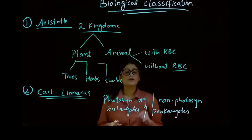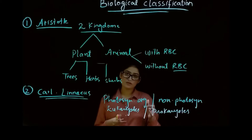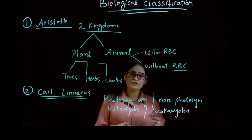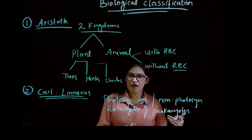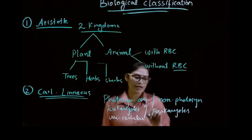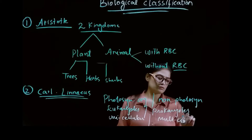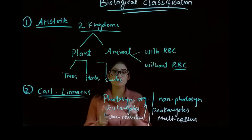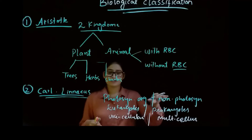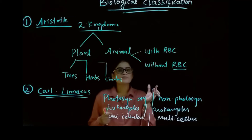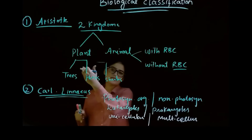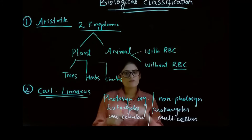Photosynthetic organisms are those who can prepare their food in the presence of sunlight. Eukaryotes are defined as having a well-defined nucleus, while prokaryotes do not have a well-defined nucleus. In the same way, unicellular organisms consist of a single cell while multicellular organisms consist of more than one cell. All these organisms — photosynthetic, eukaryotes, prokaryotes, unicellular, and multicellular — have no place in the two kingdom system, so the two kingdom idea given by Aristotle and Carolus Linnaeus didn't work well.